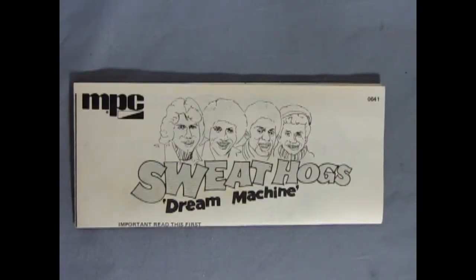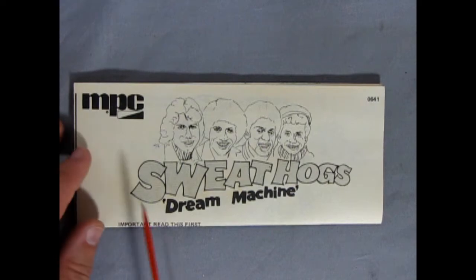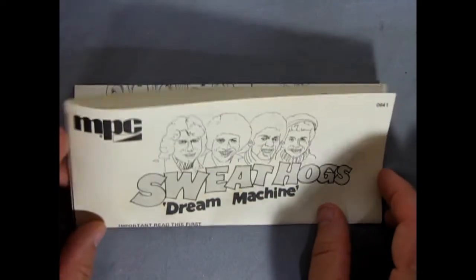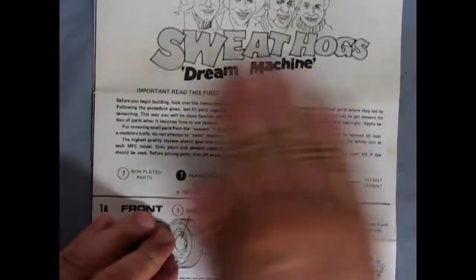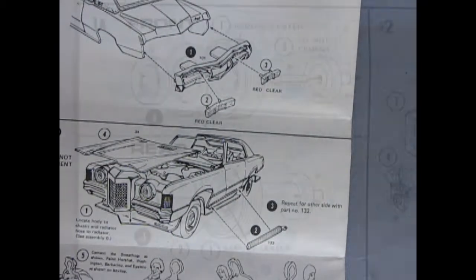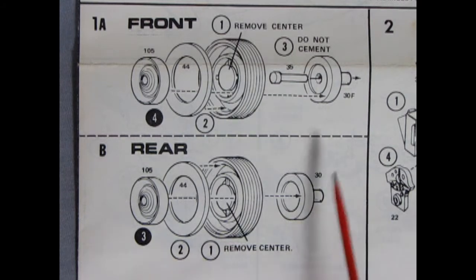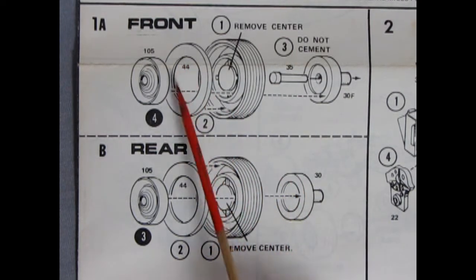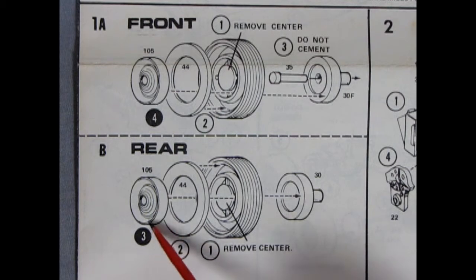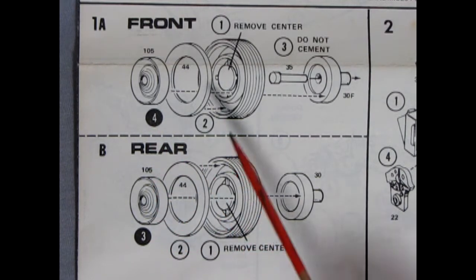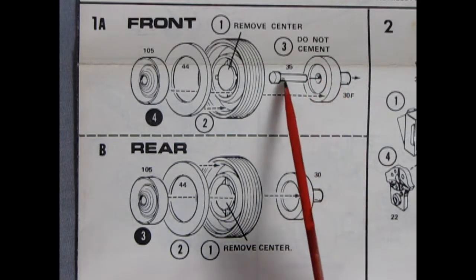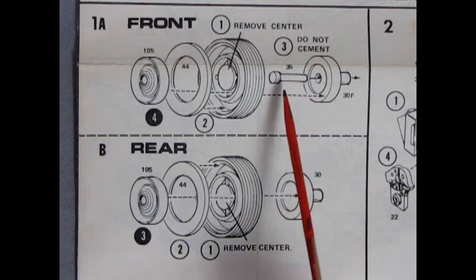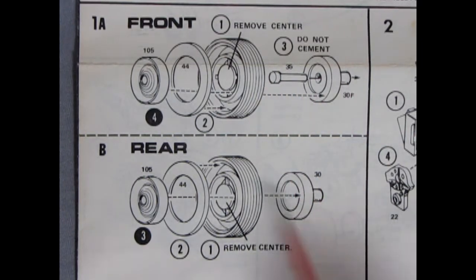So here we have our Sweathogs Dream Machine and all our little stars from Welcome Back Kotter. And then as we open this up we can see again it's the typical brochure type of the two-page fold flip and triple fold. Here we have our wheels and tires and there's a nice big fat white wall insert as well as these sort of sombrero style hubcaps. And then we've got our front rubber tires and our front wheel backs and the rear wheel back as well. These ones of course have the peg going through and these ones are flat.